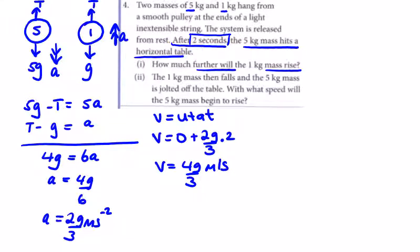What's happening with the 1 kg mass now? It's going to continue to rise. We're asked how much further, so we're looking for s. The 1 kg mass has the same speed as the 5 kg when it hit the table. It will come to rest before starting to come back down.